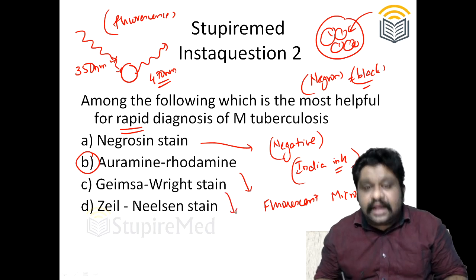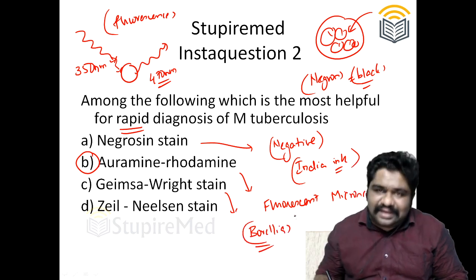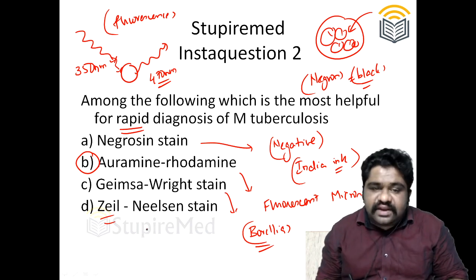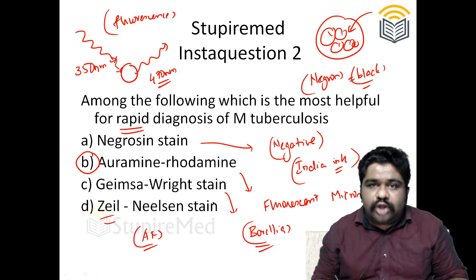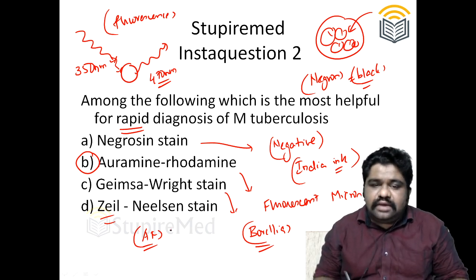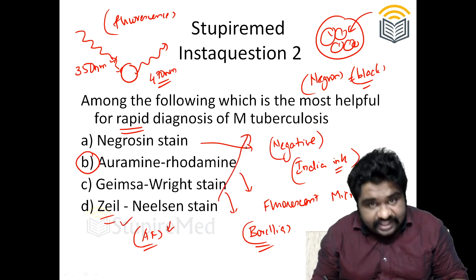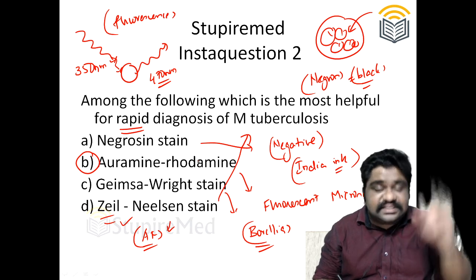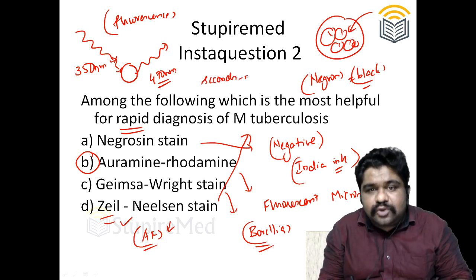Giemsa stain in bacteriology is useful for analyzing and looking at Borrelia. Ziehl-Neelsen technique is the standard modified acid-fast technique meant for mycobacteria and all organisms under the order Actinomycetales. Ziehl-Neelsen can be useful for M. tuberculosis, but it does not give you a rapid answer. In contrast, with auramine rhodamine staining, you can get results rapidly — in a matter of seconds to minutes.